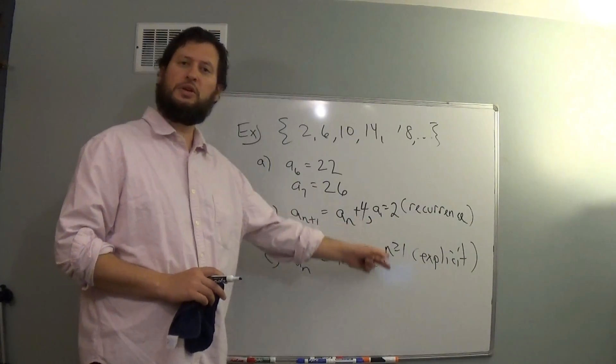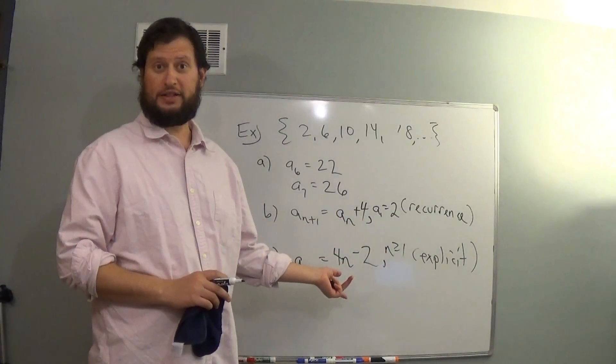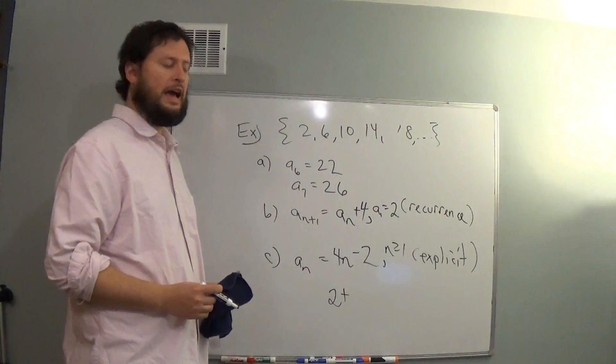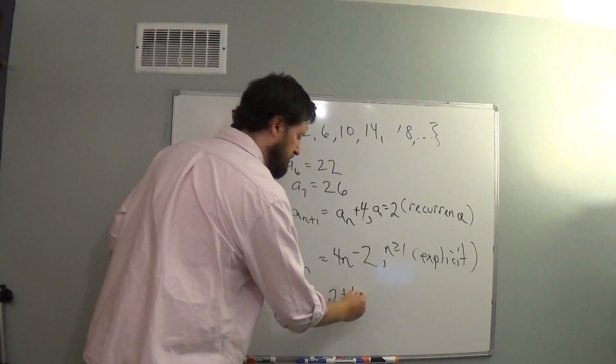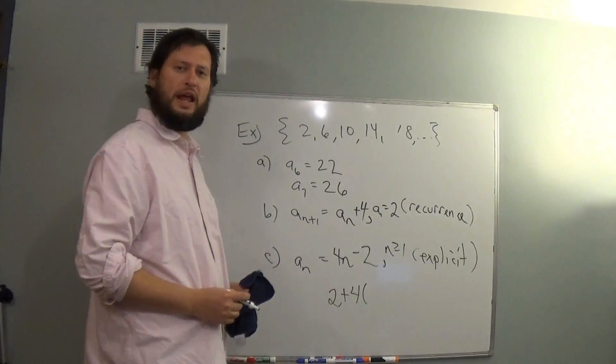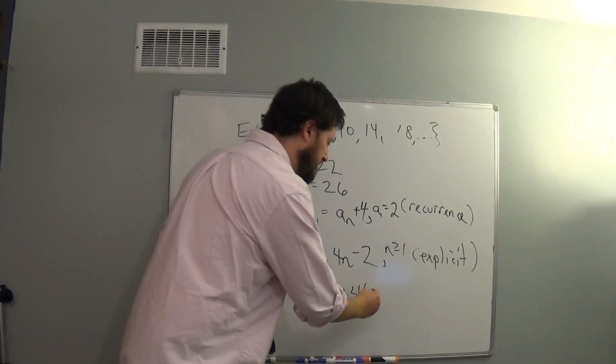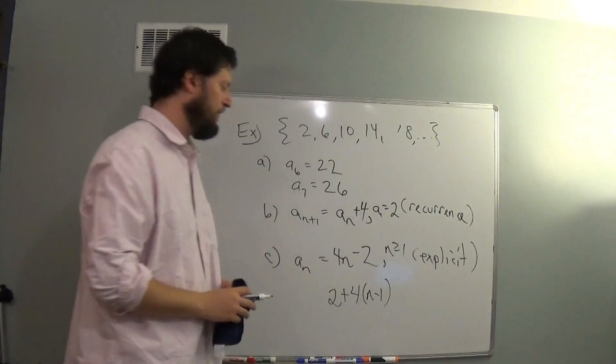Now there are alternate ways of writing this that are still correct. We could have instead thought, well, let's start at 2. We'd like to add multiples of 4, but I can't just say 4n because when n is 1, that would start me at 6. So I actually need to back that off a little bit.